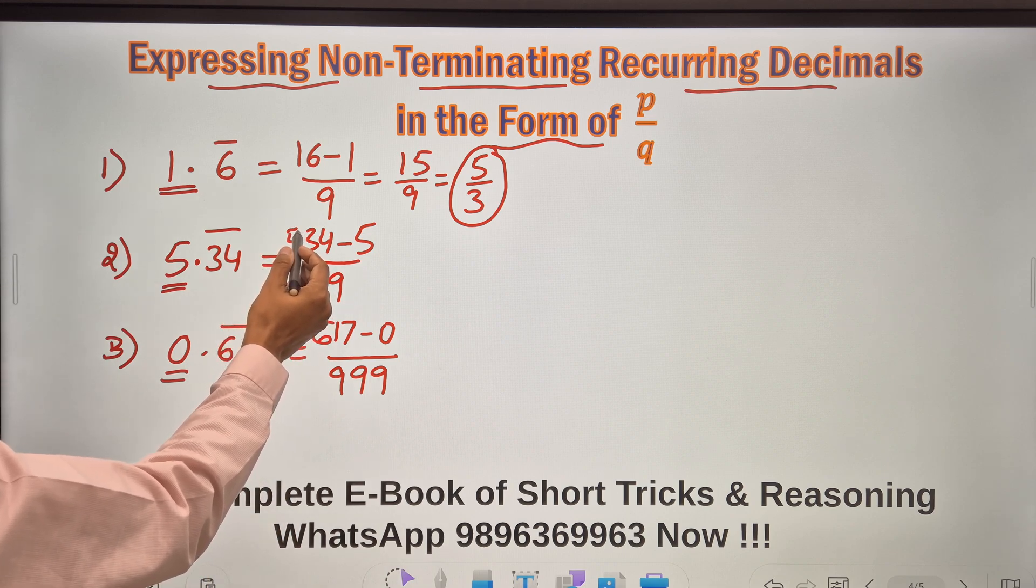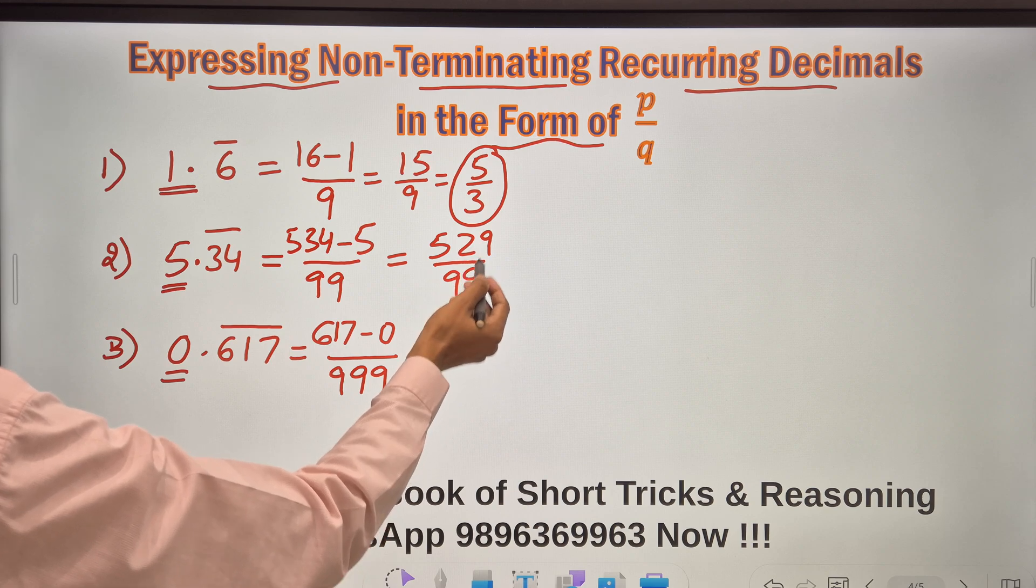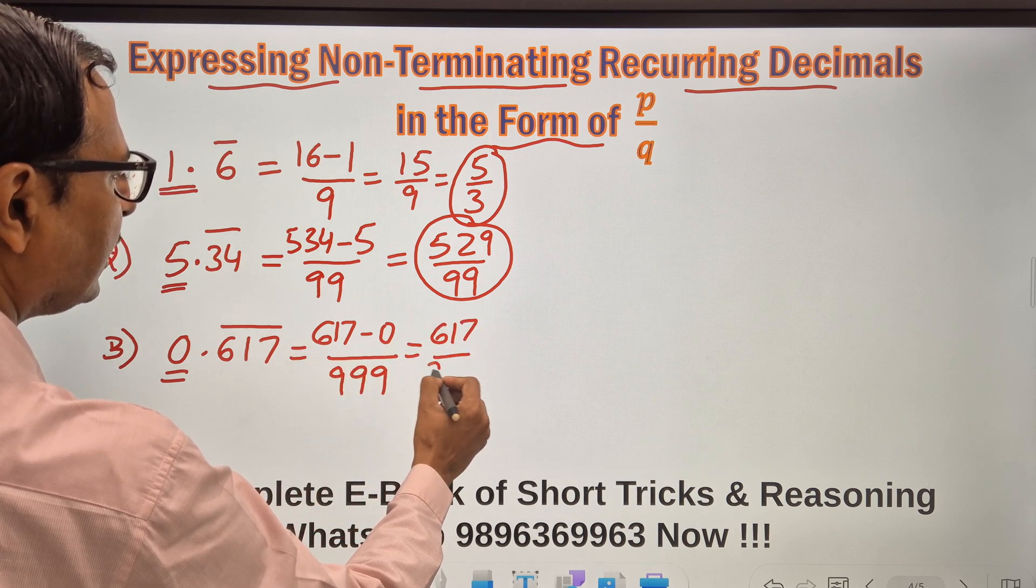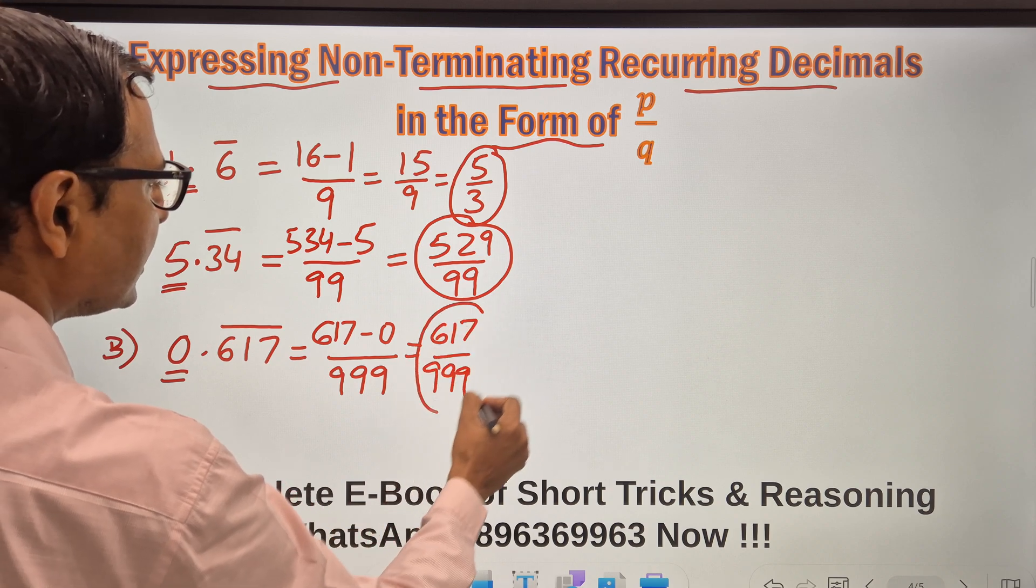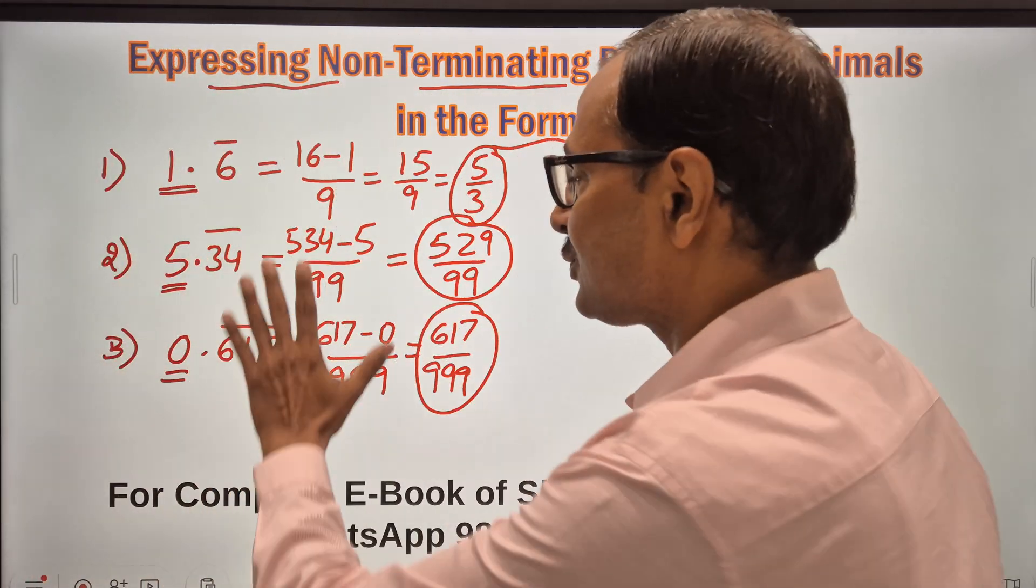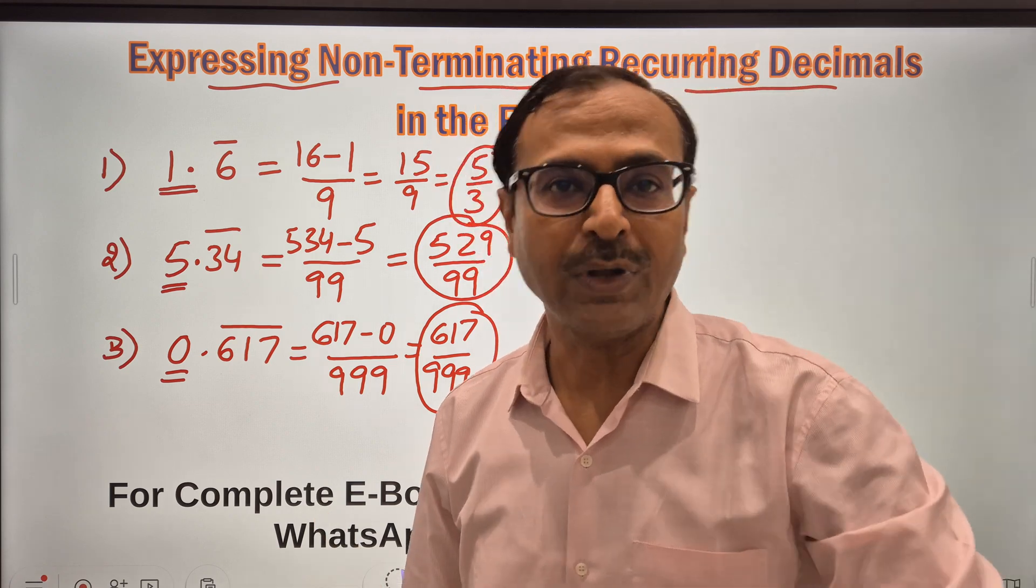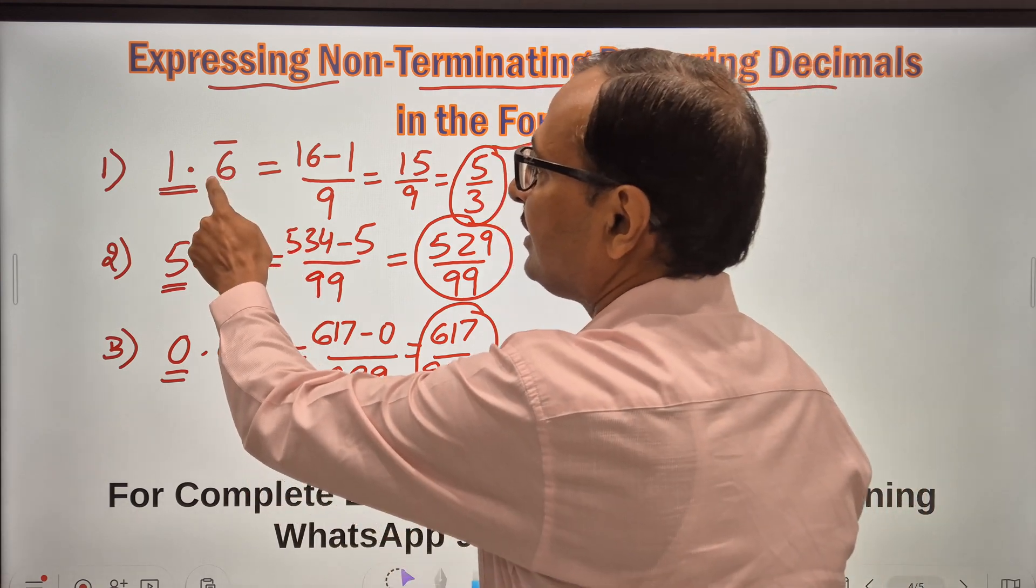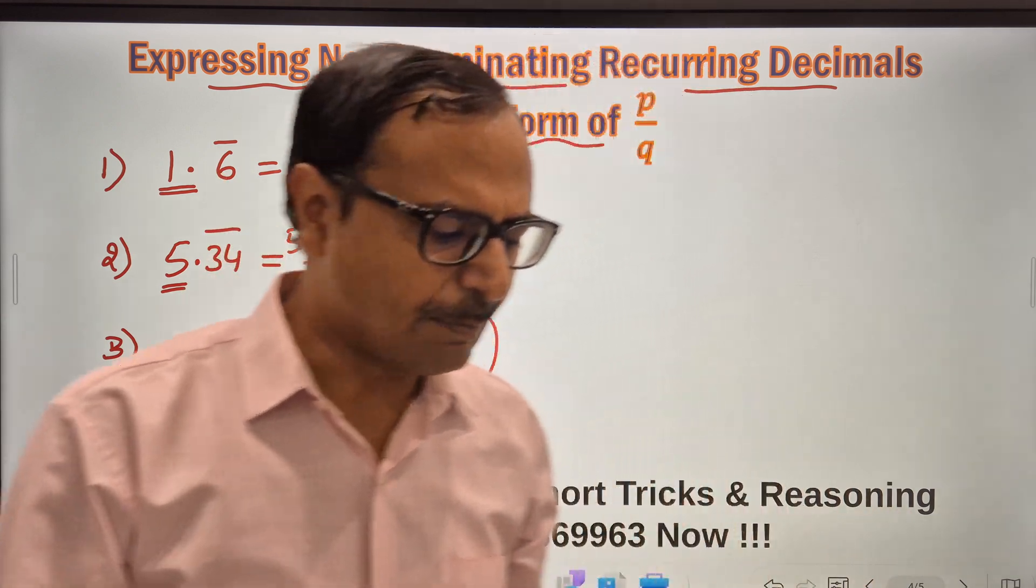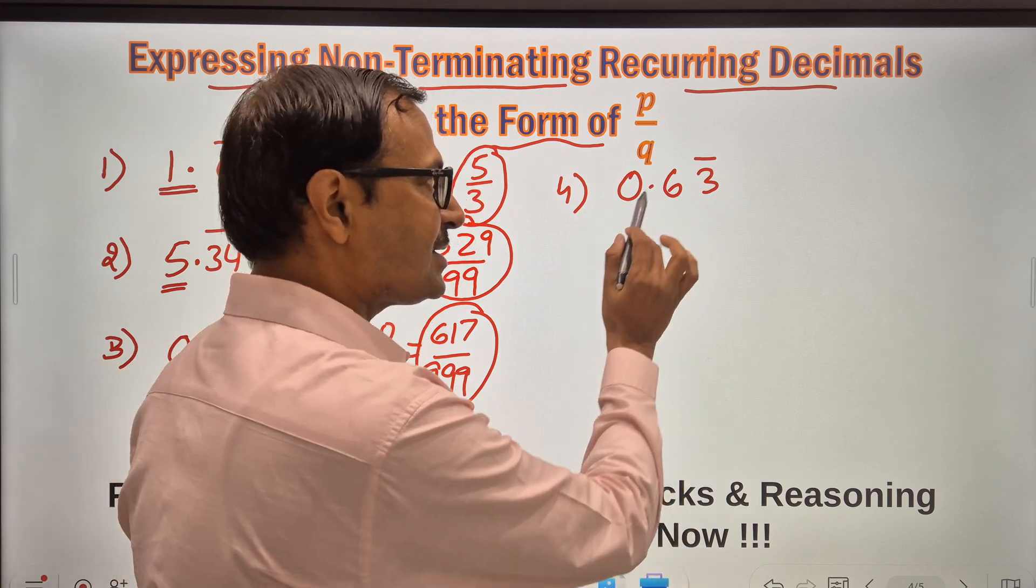Likewise here, 534 minus 5 is 529 upon 99. So I don't think it is getting canceled by any common factor, so this itself becomes your answer. Likewise here also, 617 upon 9. No common factor, so this itself becomes the answer. Pretty easy, right? The concept is very easy. If you start doing it using this, I think you can just watch what is the question and tell the rational equivalent of that question directly without having to do any step. But what happens when there are digits which are non-recurring? That means after decimal you have something which is not repeating. Let's take an example for that also.